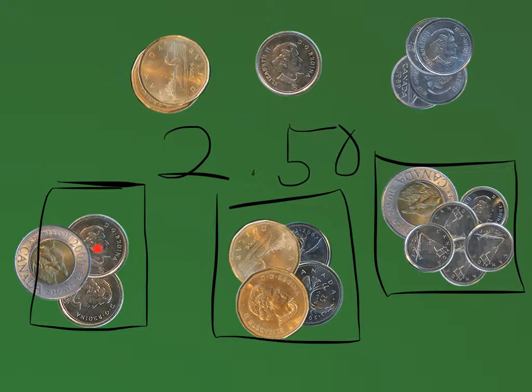But this one is the actual coin of two dollars, and then these two are 25 and 25, which are quarters I believe. 25 plus 25 is 50, and then one dollar, one plus one is two. So that's two dollars and 50 cents.